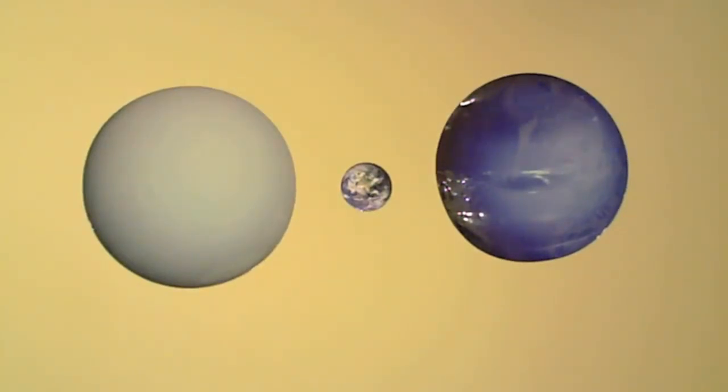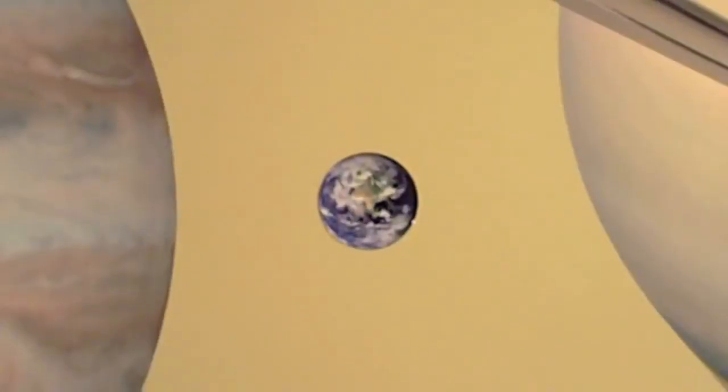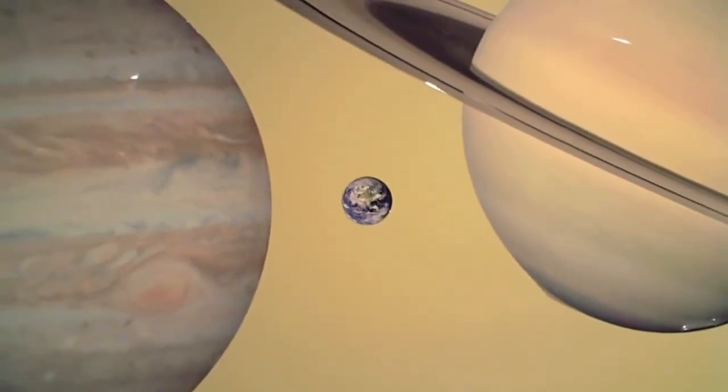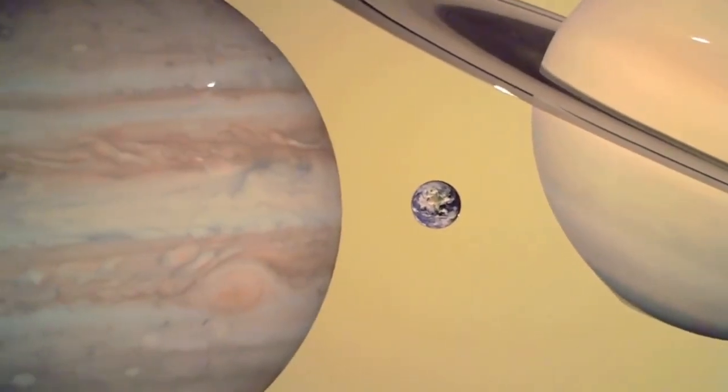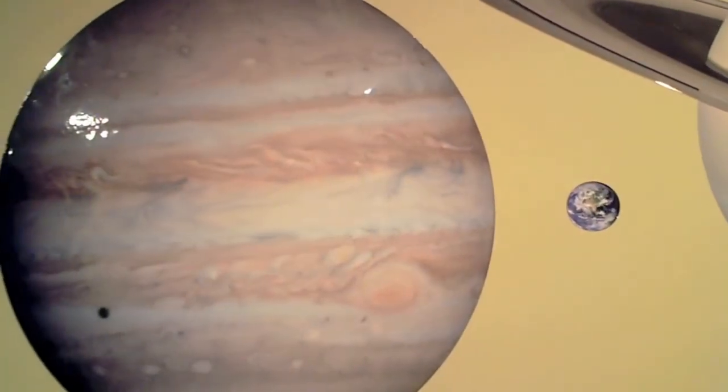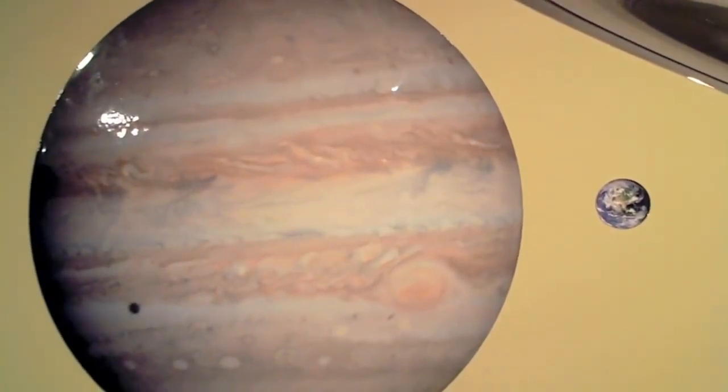Next up are the two very big gas giants, Jupiter and Saturn. Here's Earth compared to Jupiter and Saturn. Zooming out, you can see how enormous the two largest planets in our solar system are compared to Earth.